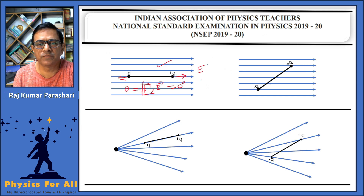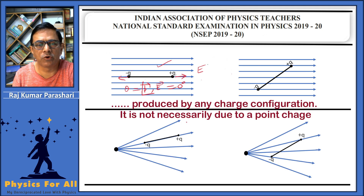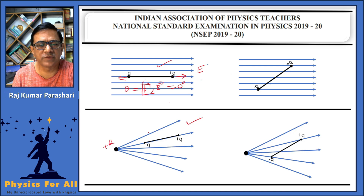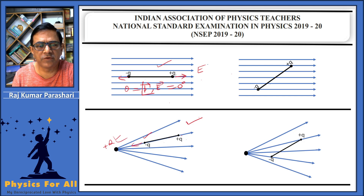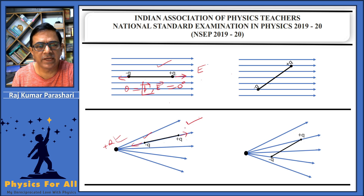Now let us check option B: there should be a net force but no torque. This is possible only inside a non-uniform electric field produced by a point charge. The point charge produces a radially outward electric field, and the dipole is placed inside this radial field. The minus q charge is closer to the source charge and hence experiences more force than the plus q charge, giving a net inward force.